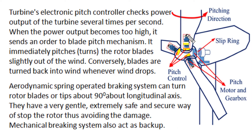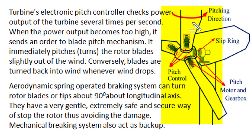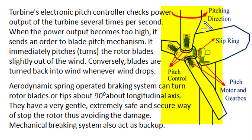Wind turbines also possess aerodynamic safety provisions against over-speed of turbine blades, which may arise when wind velocity suddenly increases to very high values, or when an electrical fault stops the output supply to the grid. In all such over-speeding conditions, a spring-operated aerodynamic braking system is provided, which can turn the rotor blades or blade tips by about 90 degrees about the longitudinal axis. This ensures minimum mechanical impact on wind turbine blades, providing a very gentle and secure way to stop the rotor.